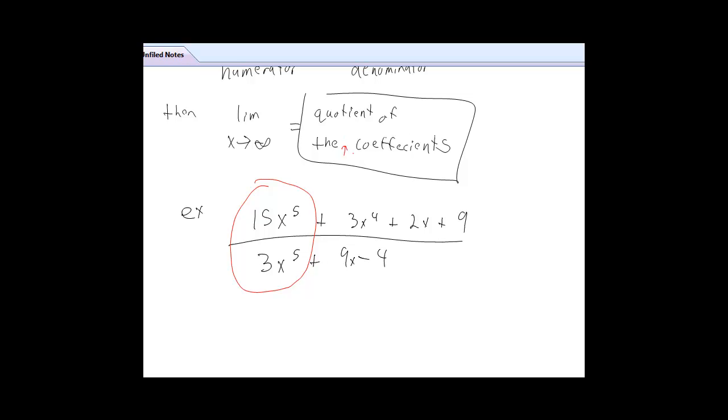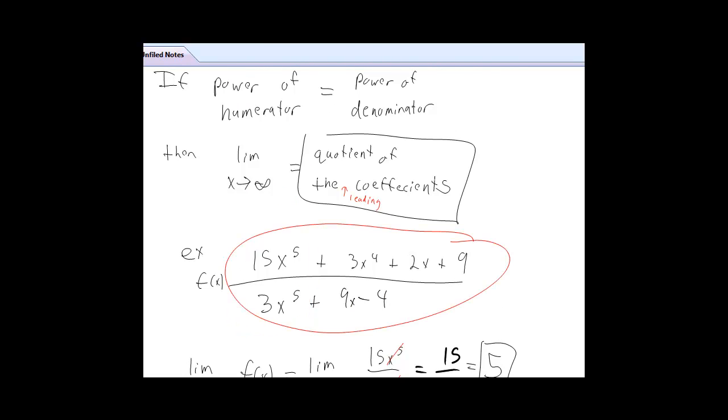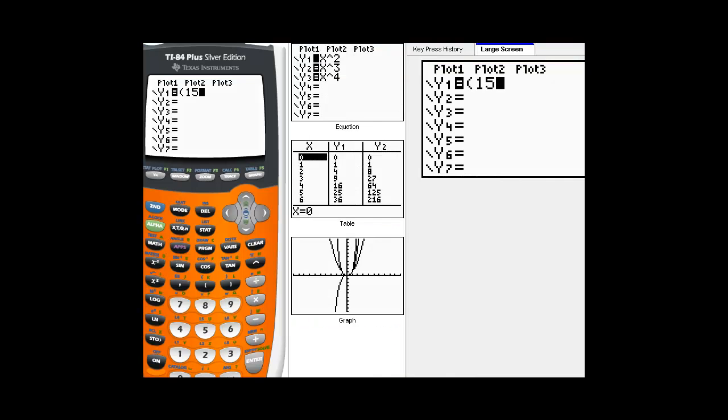So, here's another example. Do 15x cubed plus a bunch of stuff over 3x, 15x to the fifth, plus some stuff, over 3x to the fifth, plus a lot of stuff, and all we care about is the leading terms there. They cancel out. We should get that the limit as x approaches infinity is 15 over 3, which simplifies to 5. I'm going to confirm that graphically.